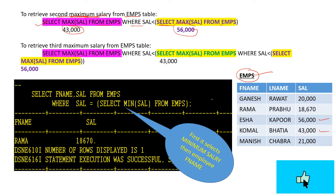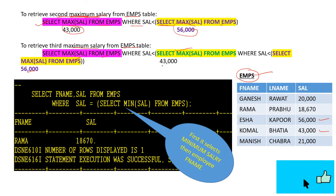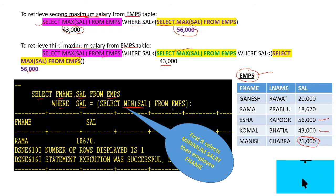To retrieve the third maximum salary from the EAMPS table, there is a main query, a subquery, and a nested subquery. The nested subquery returns 56,000, then 43,000, and the main query returns the maximum salary less than 43,000, which is 21,000. To find the minimum salary in the EMPS table, we write SELECT name, salary FROM EMPS WHERE salary equals SELECT MIN salary FROM EMPS, which returns 18,670.